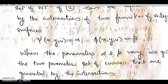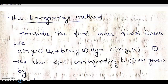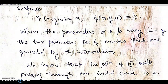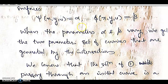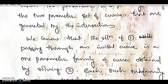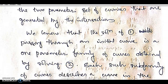If we get α and β, we get the two-parameter set of curves generated by the intersection. The solution of equation 1 passing through an initial curve is a one-parameter family of curves obtained by solving equation 2.